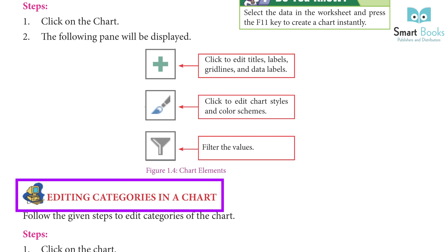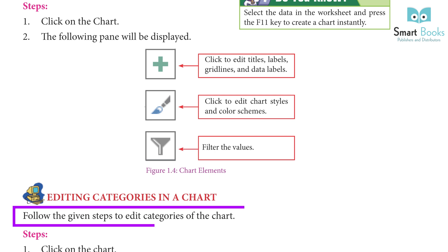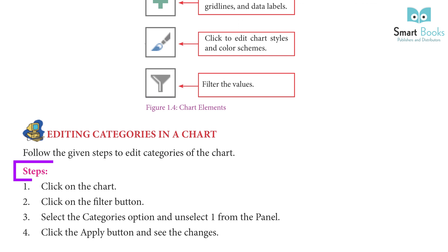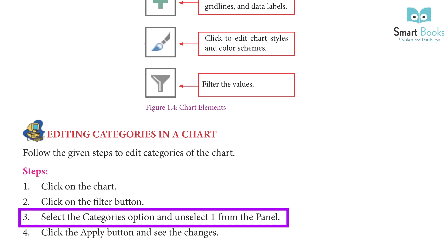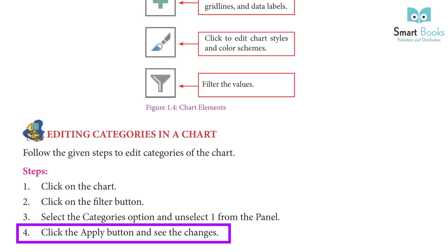Editing Categories in a Chart: follow the given steps to edit categories of the chart. Step 1: Click on the chart. Step 2: Click on the Filter button. Step 3: Select the categories option and unselect one from the panel. Step 4: Click the Apply button and see the changes.